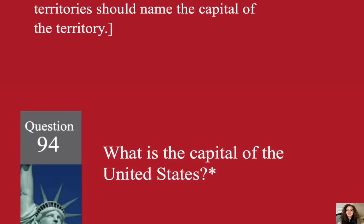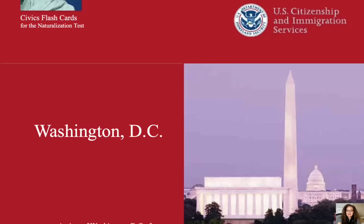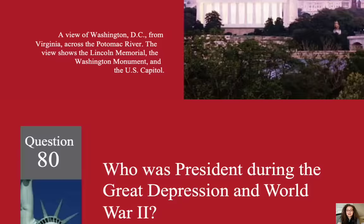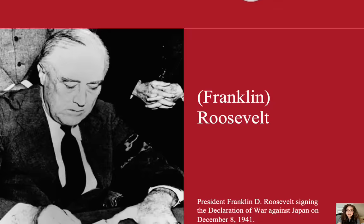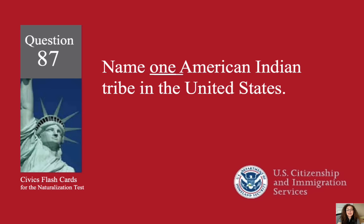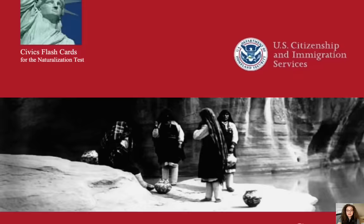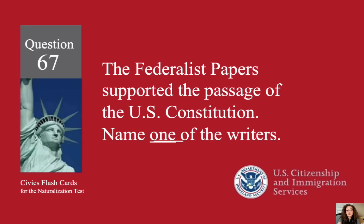What is the capital of the United States? Washington, D.C. Who was president during the Great Depression and World War II? Roosevelt. Name one American Indian tribe in the United States. Crow. The Federalist Papers supported the passage of the U.S. Constitution. Name one of the writers.